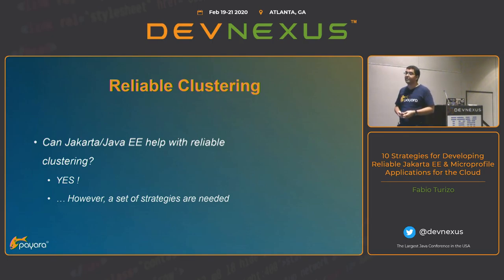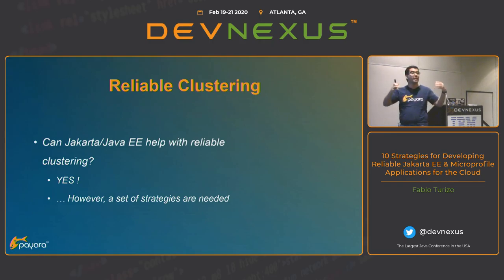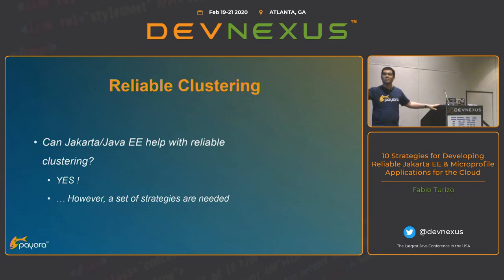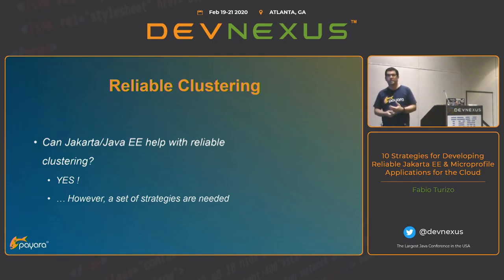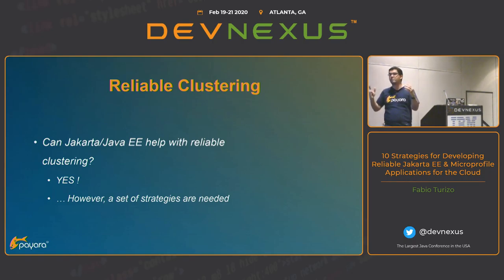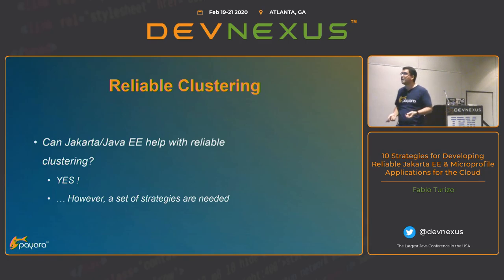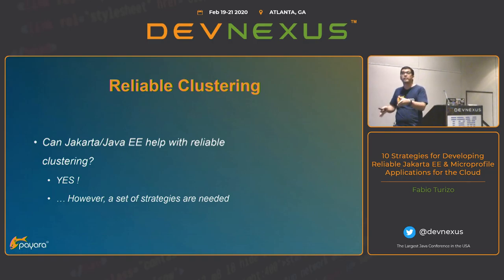Can Jakarta or Java EE help with reliable clustering? I get asked this a lot by customers and many others. I can say yes, but it's not perfectly clear how. There is no API or specification that says, 'if you want to distribute your application among multiple nodes, use these annotations or do this.' There's no specification at the moment. One of the things the community wants to do for future versions of Jakarta EE is to standardize distribution, because that's one of the main weaknesses seen in the platform.